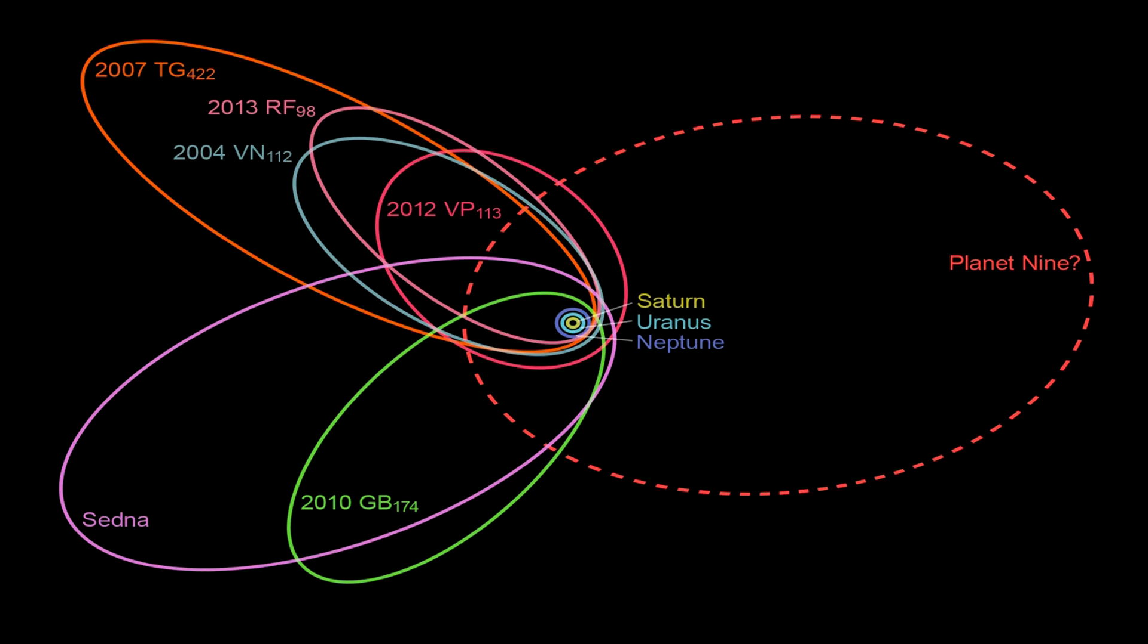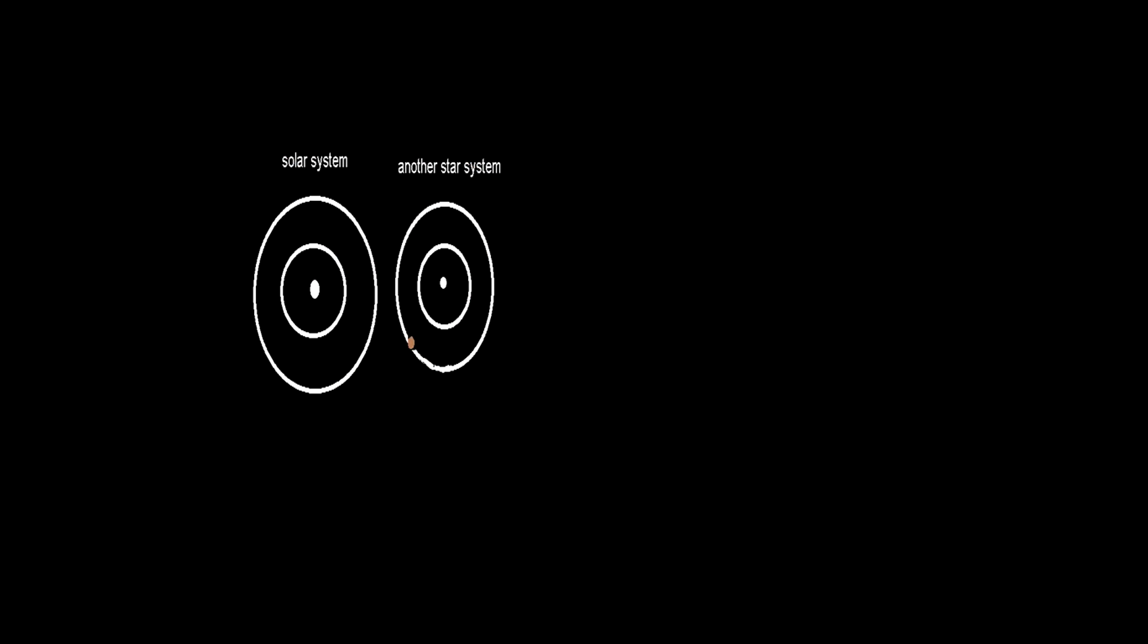Scientists speculate that our sun may have stolen Planet 9 from another star system 4.5 billion years ago during the formation of our solar system.